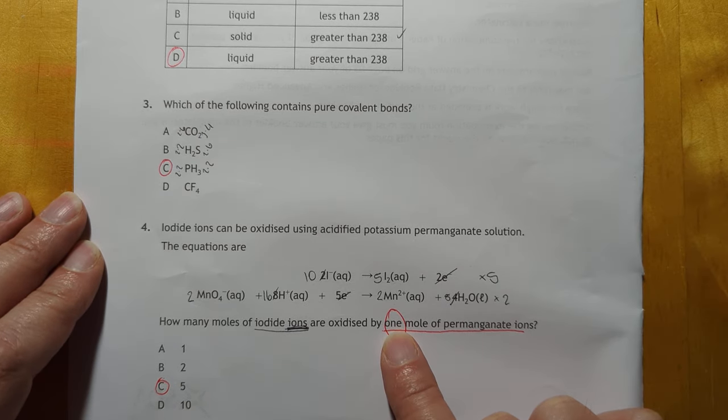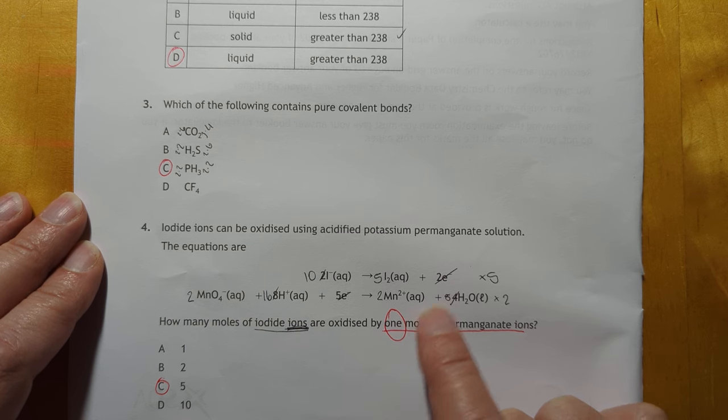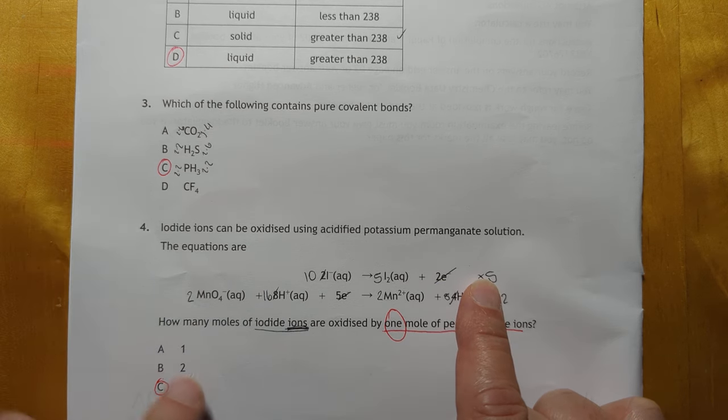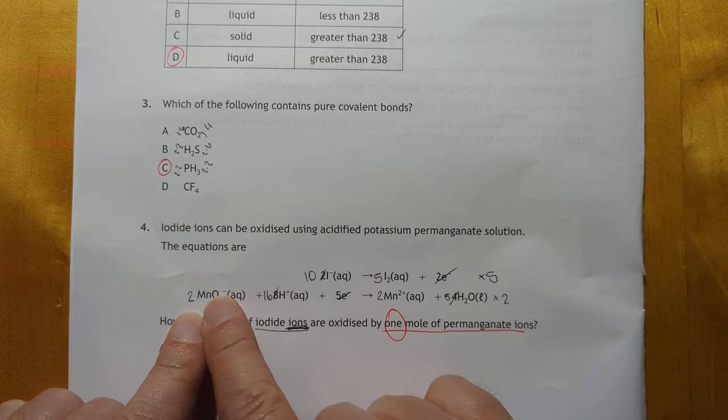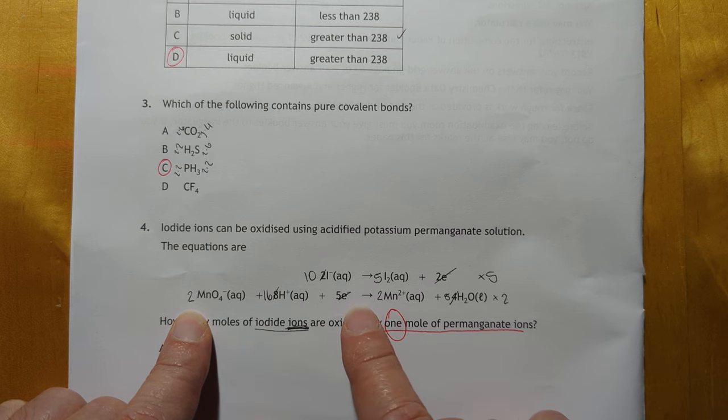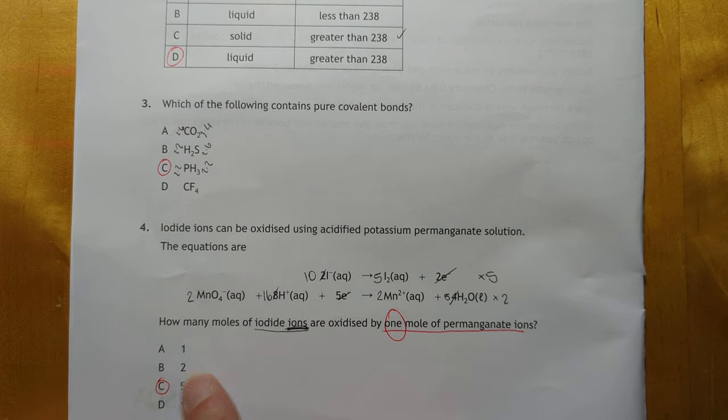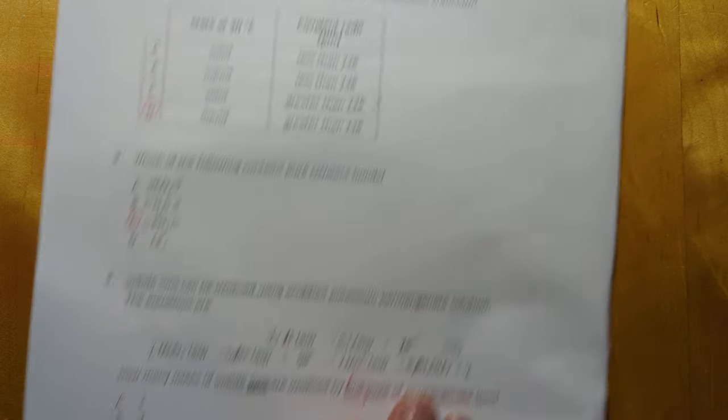pH 3. One mole of permanganate. That's a tricky one, this one. You get two electrons multiplied by five. Five electrons multiplied by two. But if you only get one mole of permanganate, so two reacts with ten, so one would react with five. That's quite a sneaky one. Quite a sneaky question, that one.